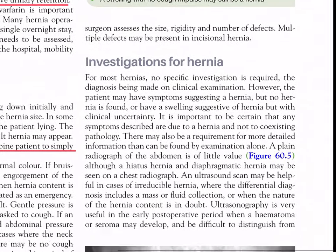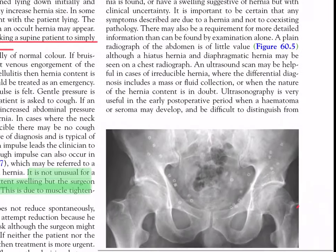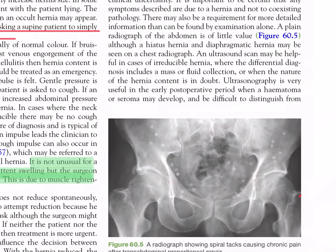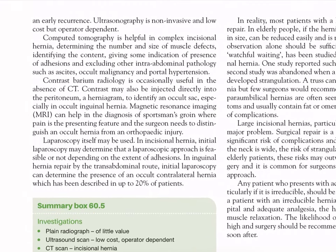For most hernias no specific investigation is required, with diagnosis made on clinical examination. However, if a hernia is suspected but not found, or a swelling is present with clinical uncertainty, further investigation is warranted. A plain radiograph of the abdomen is of little value, although hiatus hernia and diaphragmatic hernia may be seen on a chest radiograph. Ultrasound scan may be helpful in cases of irreducible hernia, where the differential diagnosis includes a mass or fluid collection, or when the nature of the hernia content is in doubt. Ultrasonography is very useful in the early post-operative period to distinguish a hematoma or seroma from an early recurrence. It is non-invasive and low cost but operator-dependent.